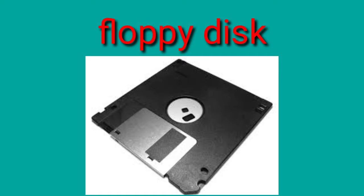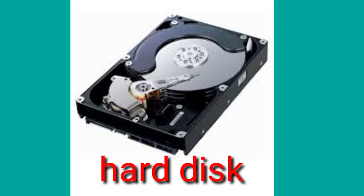Hard disk is a set of magnetic disks stacked together. Each disk requires a read or write head — one for each side. The data is stored on the surface of the disk in sectors and tracks. The data from a hard disk can be accessed randomly or directly. Hard disks are larger in size and heavier in weight.